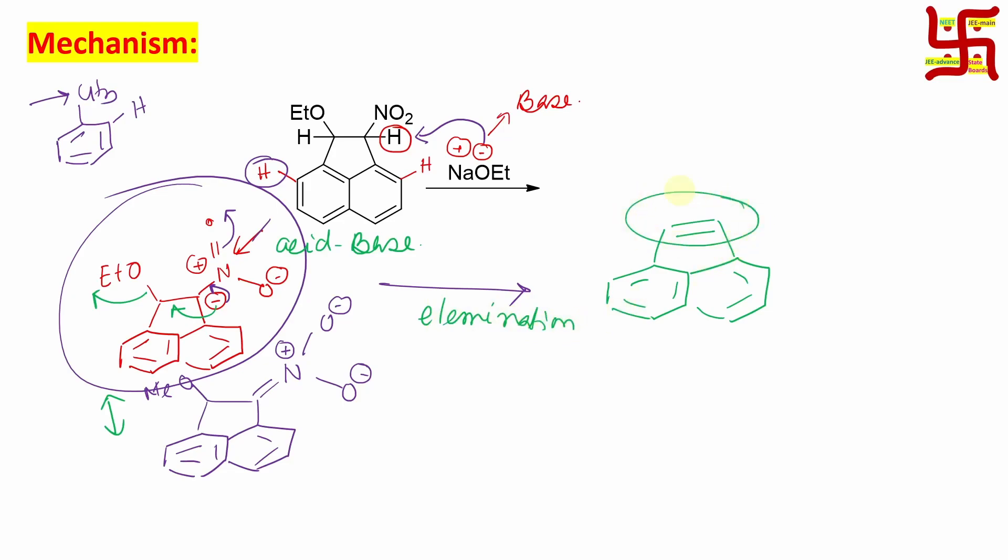So, what category does this mechanism belong to? This is actually overall, if you say mechanism, it's an elimination. But the pathway is actually E1CB. Why? Because E1 means actually the removal of this leaving group, but it's not happening here. First thing what's happening? This carbanion or conjugate base is generating, means the acid-base reaction. Later on, the elimination takes place to produce this alkene. So, this belongs to E1CB category.